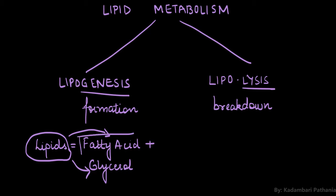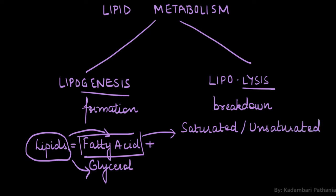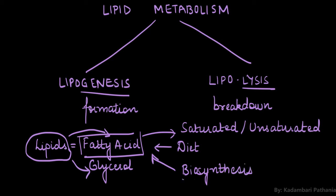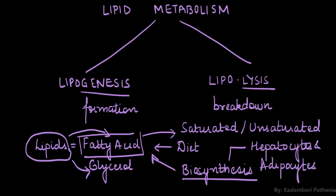Fatty acids are of different kinds — they can be saturated, which means no double bonds, or unsaturated. In our body, the sources of fatty acids are: first, through diet, and second, through biosynthesis. The cells capable of performing biosynthesis are hepatocytes and adipocytes.